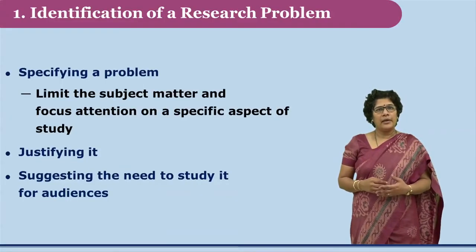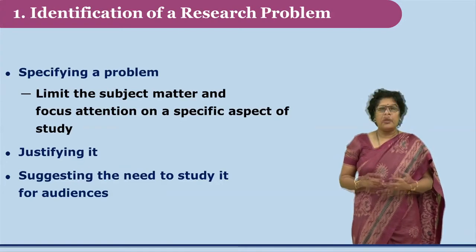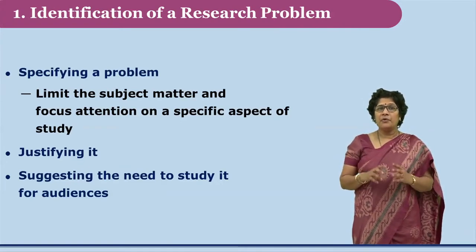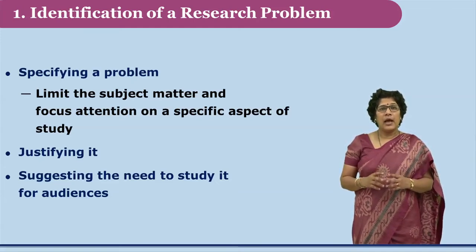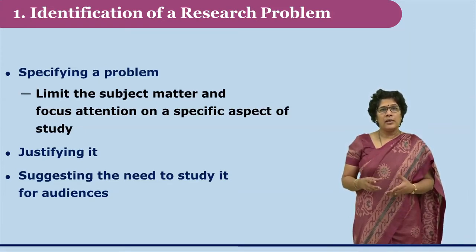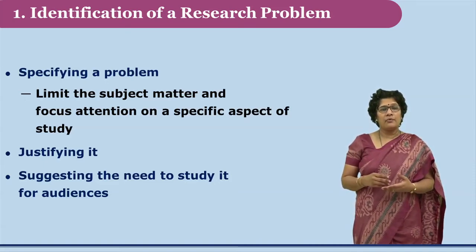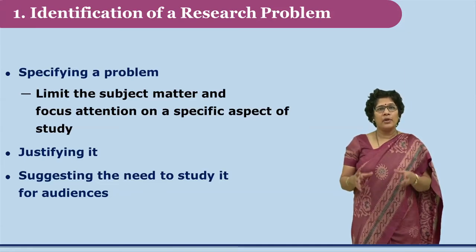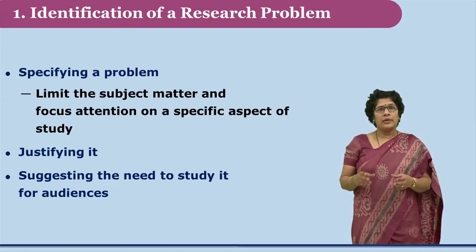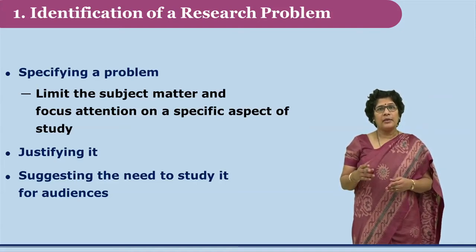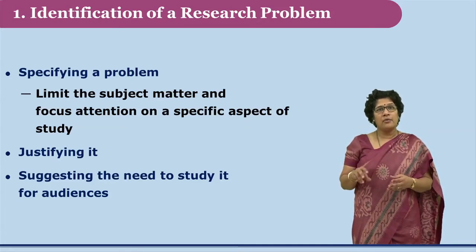The first step is the identification of a research problem. It is very difficult, especially for the novice researcher, to identify a research problem that could be completed during the given course of time. In this first stage of specifying the problem, the researcher has to limit the scope of the research so that it can be completed in the given timeline, as well as give enough scope to go into the details of the study.